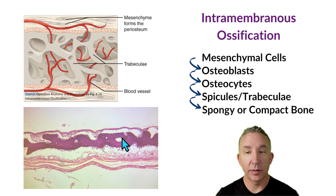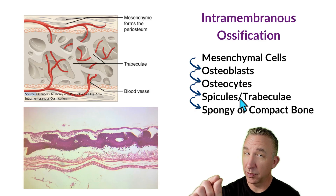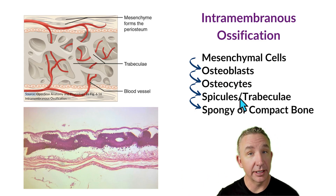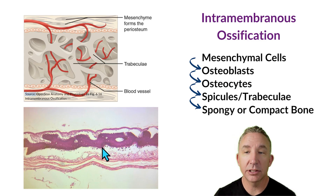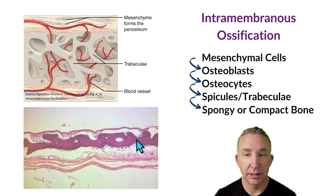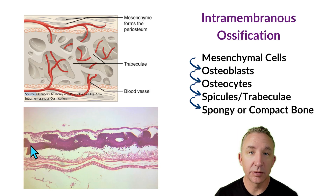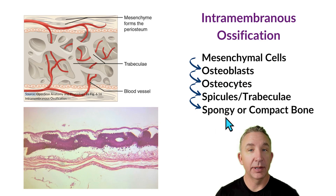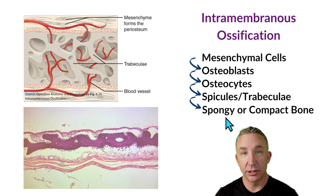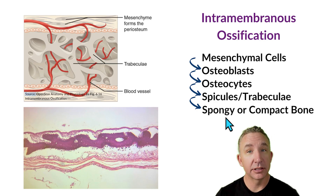Once we have these cells creating that product, we call them spicules or trabeculae. A spicule is a basic little branch that starts, and as it all branches together like a tree, it becomes trabeculae. Little pieces combine — a spicule connects with a spicule, forming struts — and together they form trabeculae. You might use those terms interchangeably in some texts. Spicules turn into trabeculae. Once I have that final branching, I can start to form my two types of osseous tissue: spongy bone, which can continue to develop and turn into compact bone depending on the location and type of bone.